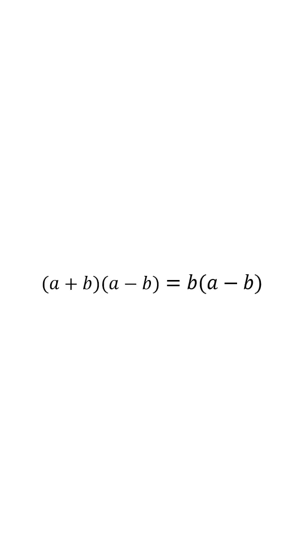We cancel out a minus b on both sides, which leaves us with a plus b equals b, where, if you recall, a equals b, making b plus b equal b, which simplifies to 2b equals b, which makes 1 equal to 2.